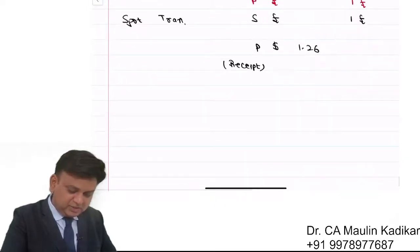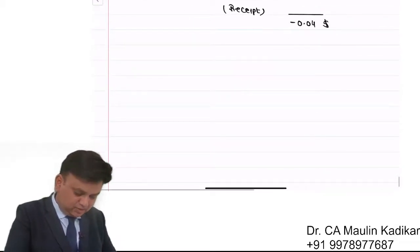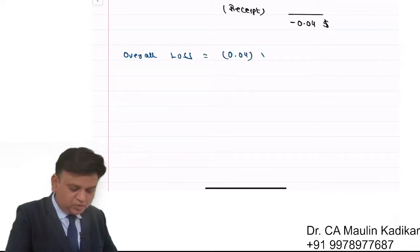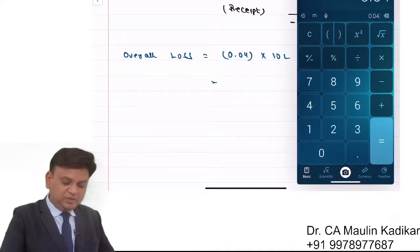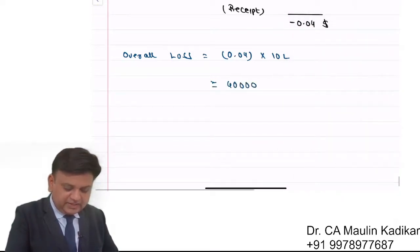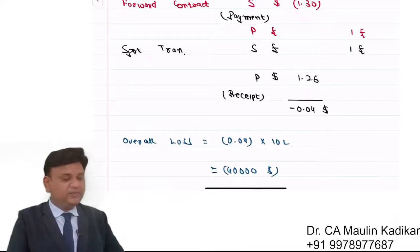Since we paid $1.30 per pound but receive only $1.26 per pound, there is a loss of $0.04 per pound. For £1,000,000, the total loss is $40,000 USD. We understand that whenever you enter into a speculative transaction, it may result in a profit or it may result in a loss.